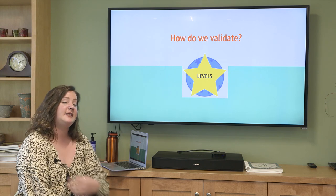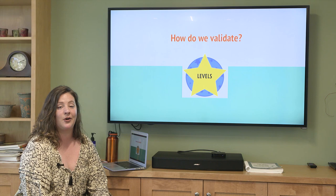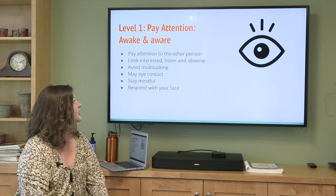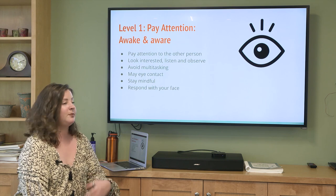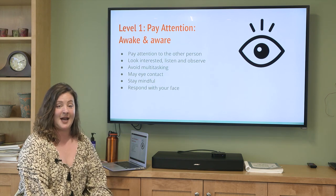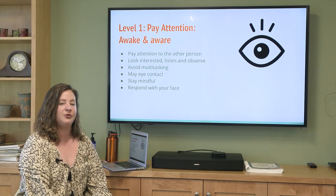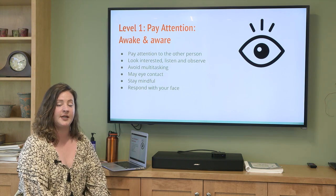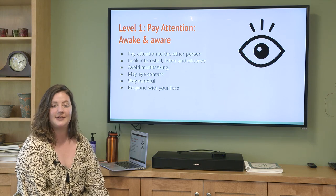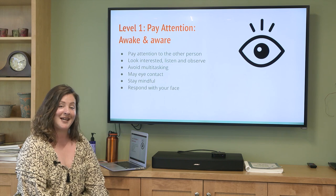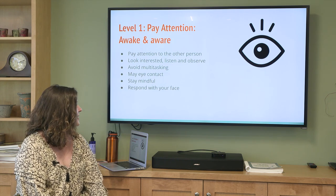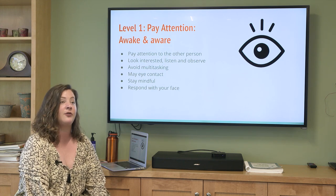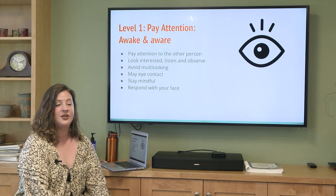So how do we validate? In DBT there are different levels of validation. Level one is paying attention and being awake and aware. You want to pay attention to the other person, maintain eye contact, and observe what's going on — really using those mindfulness skills. You want to look interested, listen, avoid multitasking, stay mindful, and respond with your face: nodding your head and acknowledging the other person's experience so they know you are listening and paying attention.